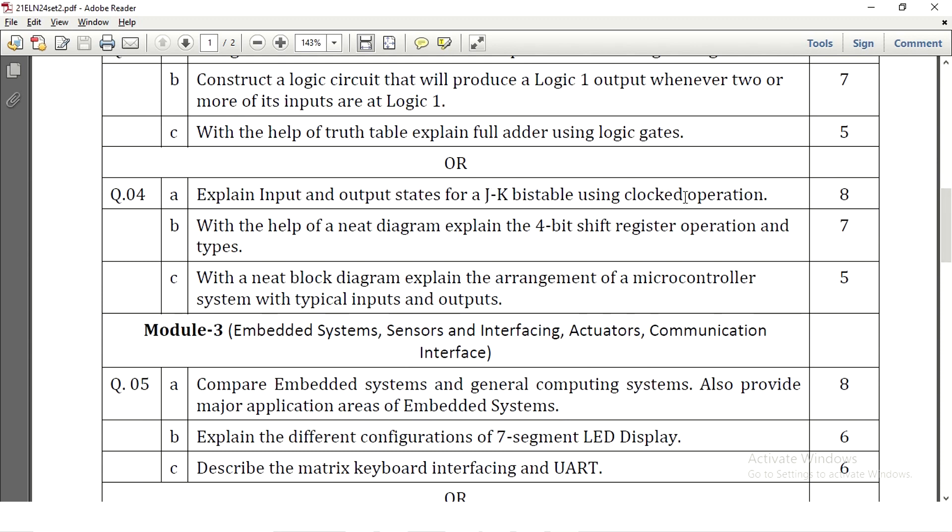Explain input and output state of JK bistable using clocked operation. Here with clock JK bistable need to be explained. Again truth table, block diagram and a waveform. With the help of neat diagram explain 4 bit shift register operation and its types. So 4 bit shift register need to be explained how the shifting will be, and then they have asked you to write the types also. Types are PISO, SIPO, SISO, PIPO. Like that the types need to be explained in one or two lines. With a neat block diagram explain arrangement of microcontroller system with input and outputs. So CPU input and output ports, input and output ports connected to input and output devices, a memory and a code need to be loaded. That and all we need to explain for 5 marks with a block diagram.